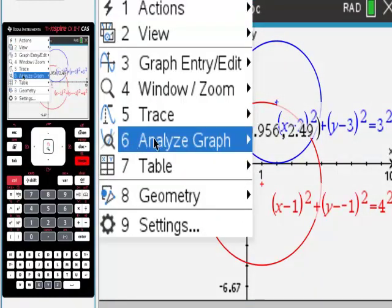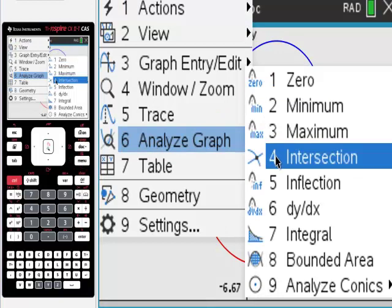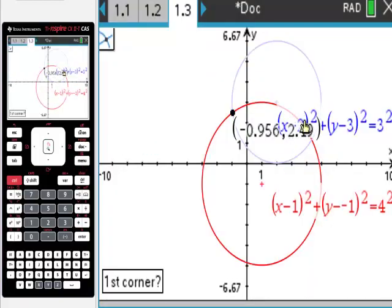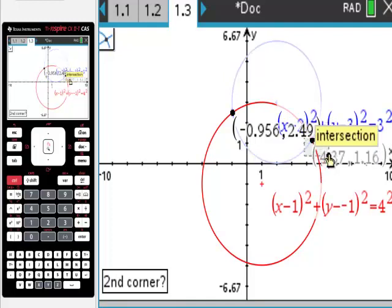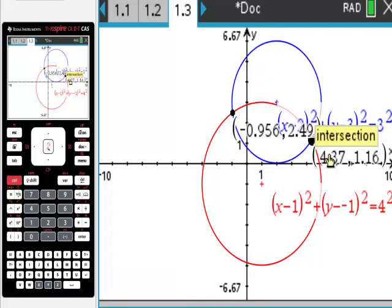Going to go back here and do the same thing again. Analyze the graph, look for the intersection. Going to go to the left-hand side of that intersection, drop a dot, and just drag that joint over. Hit enter. Boom, got it.